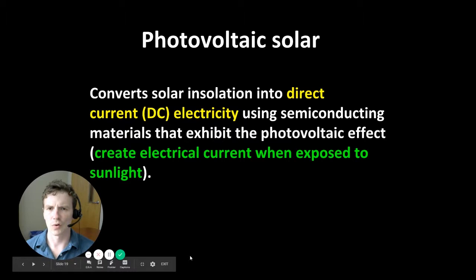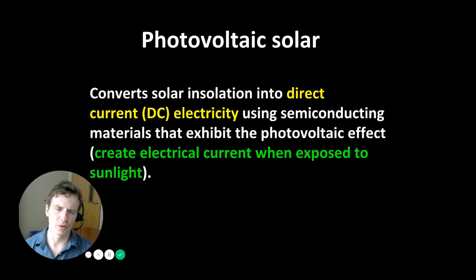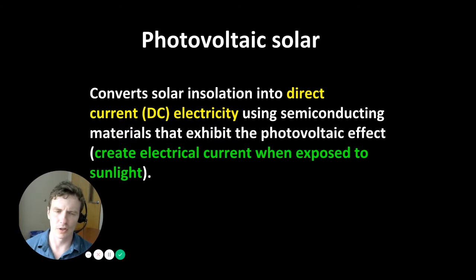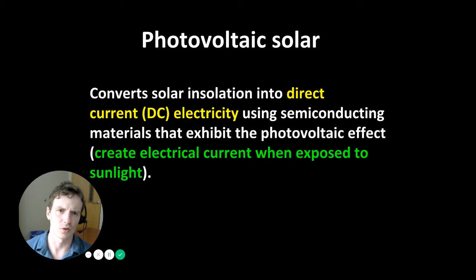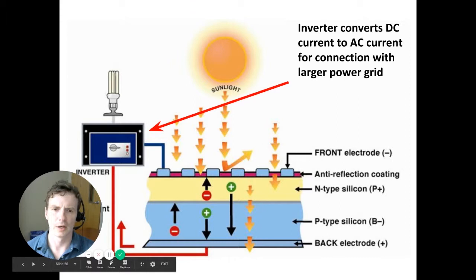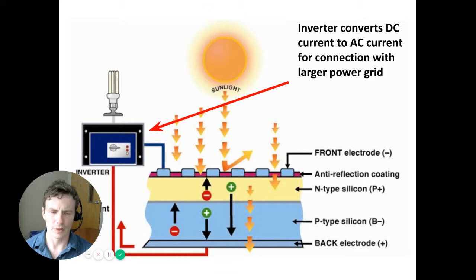Photovoltaic solar converts solar insolation into direct current electricity. Unlike concentrated solar power, it does not first generate heat to create steam to spin a turbine. It is an electrochemical engineered system where photovoltaic materials convert solar insolation directly into DC electricity. These are materials that create an electric current when exposed to sunlight. Different types of materials are set up to facilitate a flow of electrons across their interface, and that electrical current is harvested.